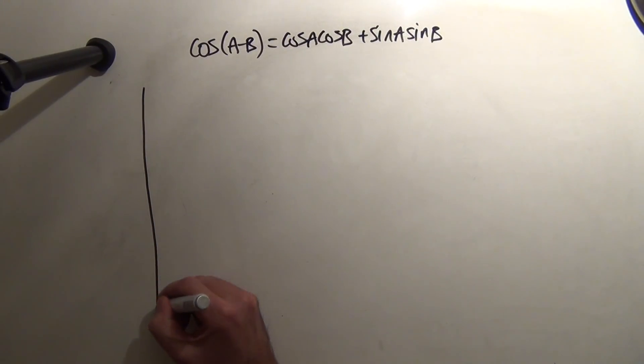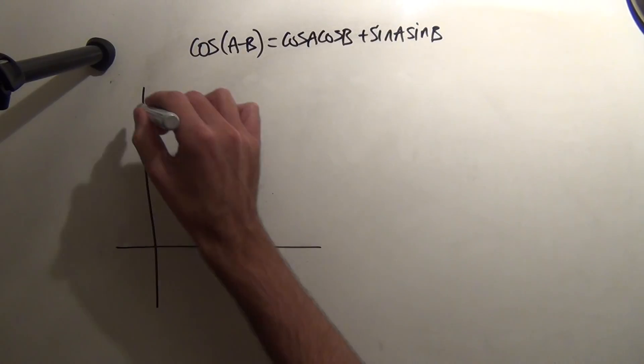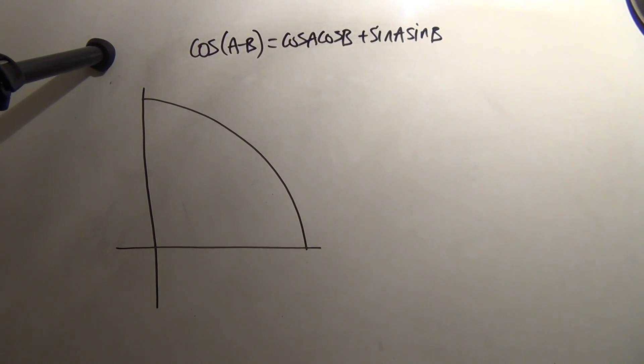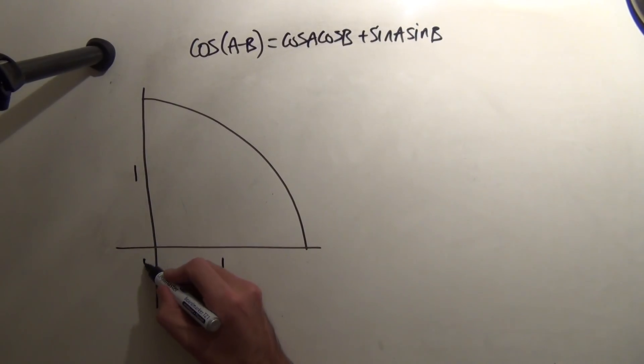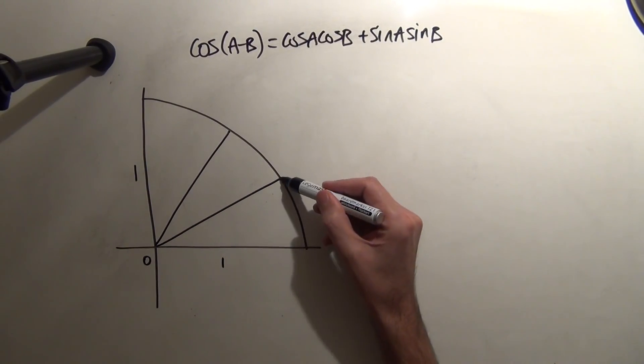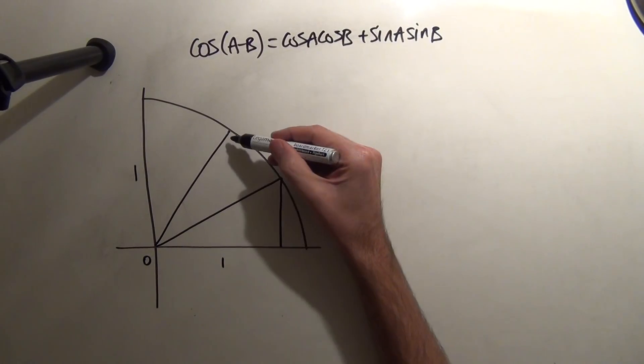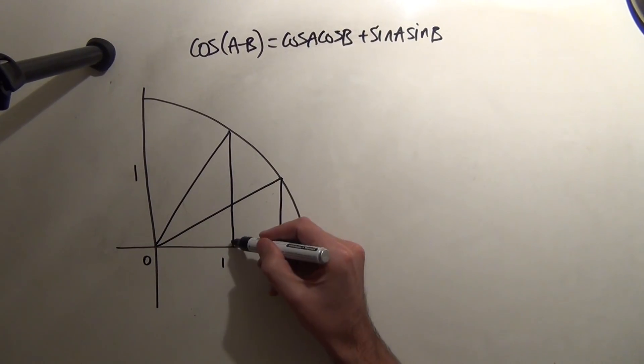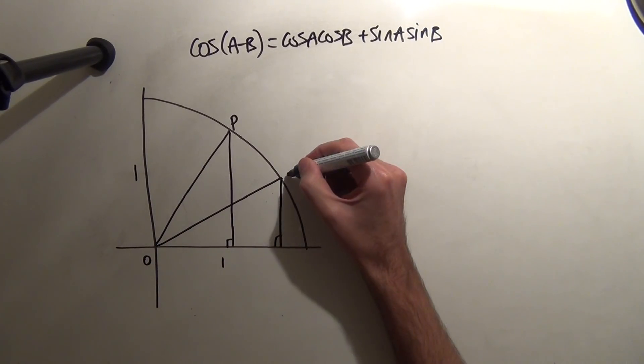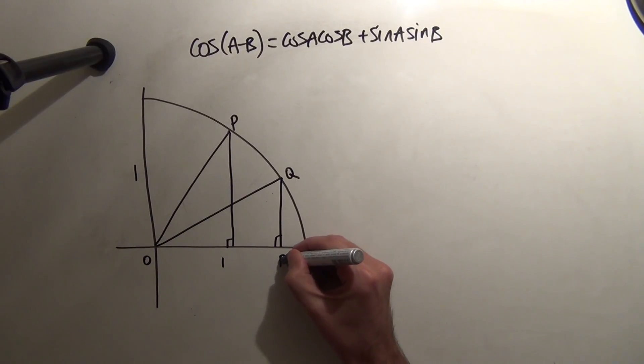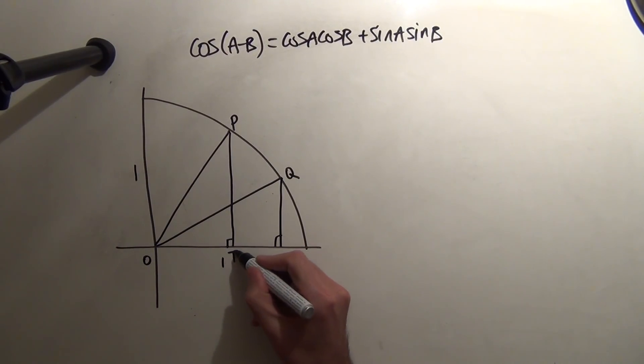So first thing is I'm going to look at part of the unit circle. So I'm looking at the first quadrant. This is one, this is one, the origin here. And I'm going to create two radii. So I'm going to create two right-angled triangles within this quadrant. Call is P, Q, R, and T.